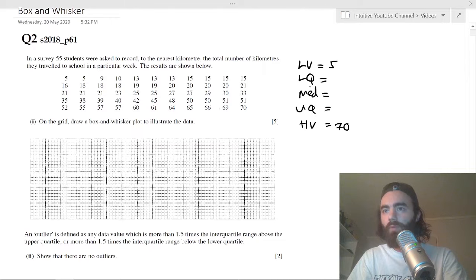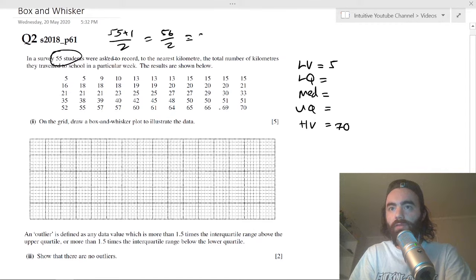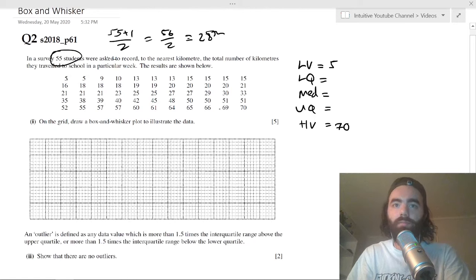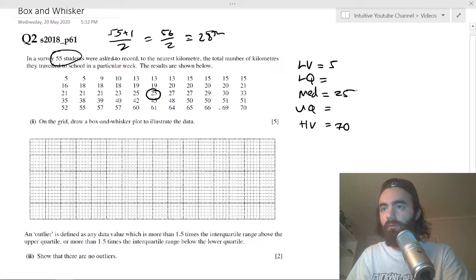Now let's find the median, which is the middle value of the data. If there's 55 students, the middle data point is (55 + 1)/2, which is 56/2, which is 28. So it's the 28th data point. We count 28 in: 1, 2, 3... 11, 22, 23, 24, 25, 26, 27, 28. So the median is 25.